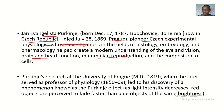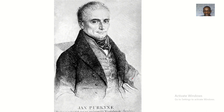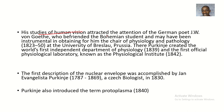He made experiments on vision, the brain, the heart, reproduction, and the composition of cells. This was definitely a great man of his time. Purkinje's research at the University of Prague, where he later served as a professor of physiology, led to his discovery of the phenomenon known as the Purkinje Effect — as light intensity decreases, red objects are perceived to fade faster than blue objects of the same brightness.